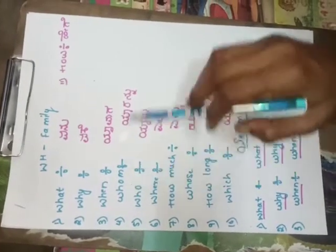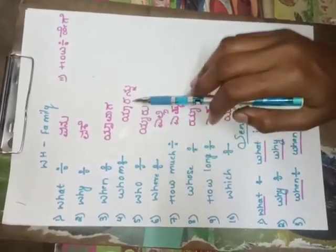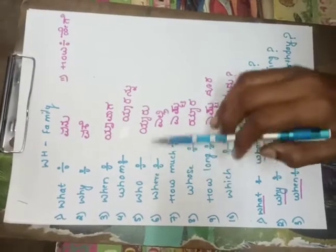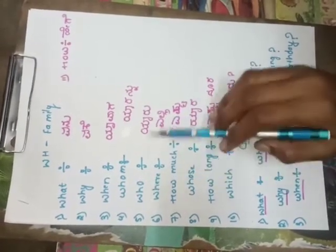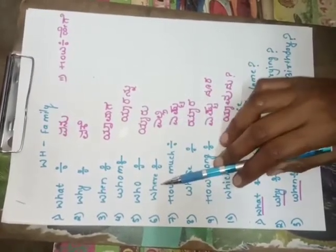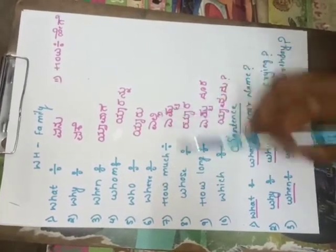Whom - whom andre? Yaranu. Who - who meaning? Yaru. Where - where andre? Alli.